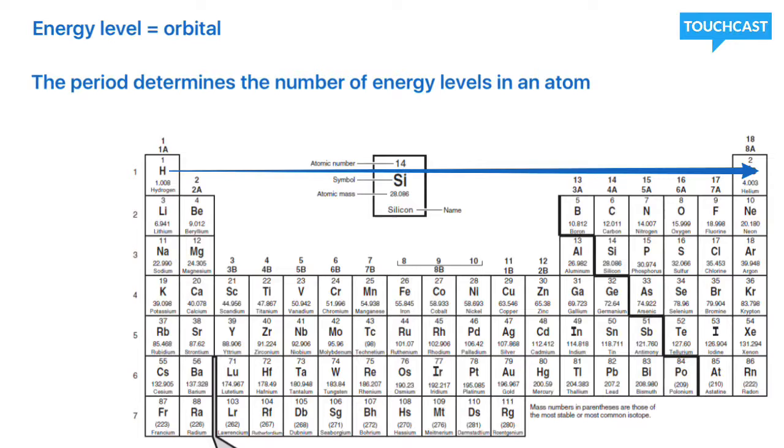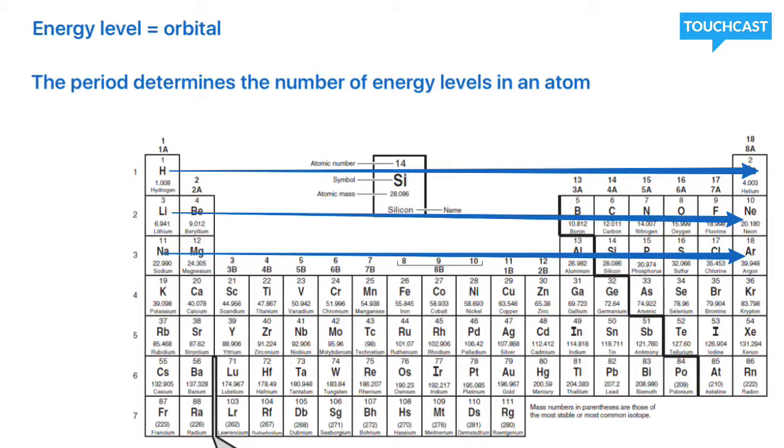Everything in period 3 will have three energy levels. You'll kind of see the pattern. The period number is the number of energy levels in that atom.